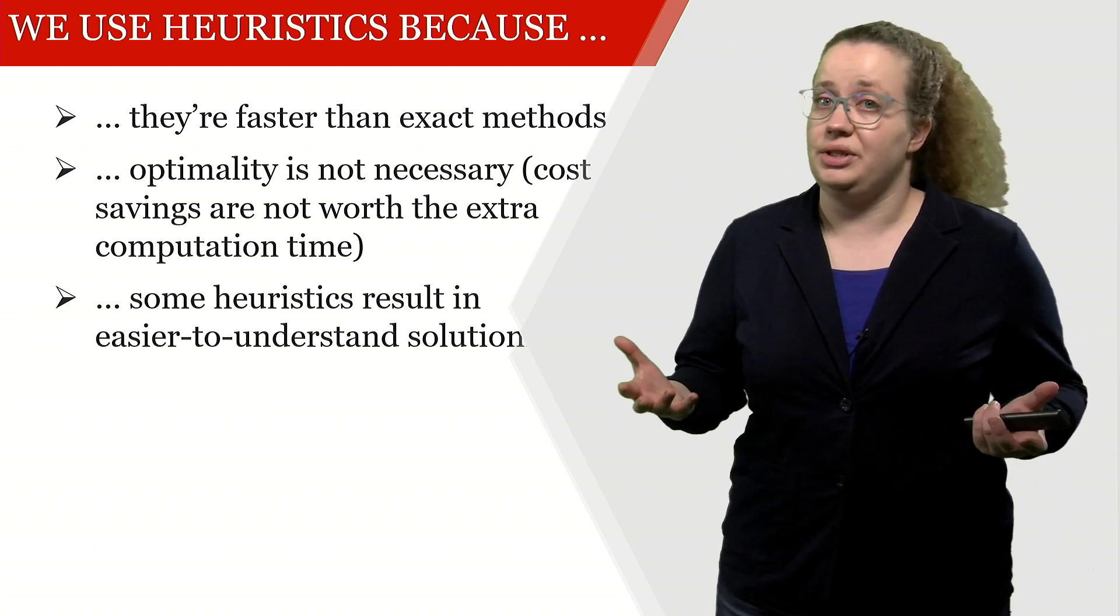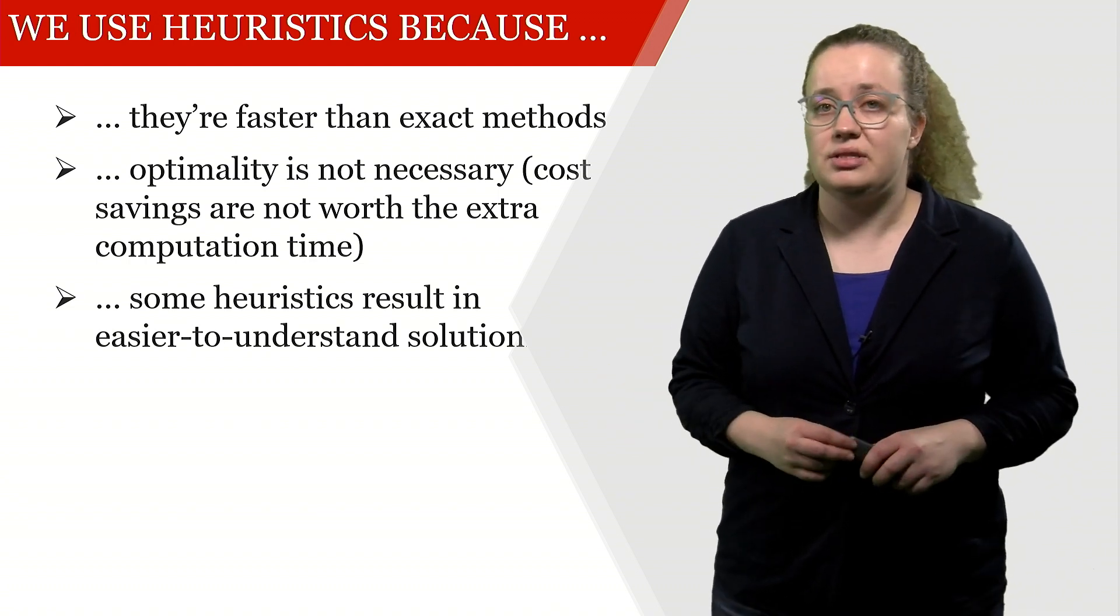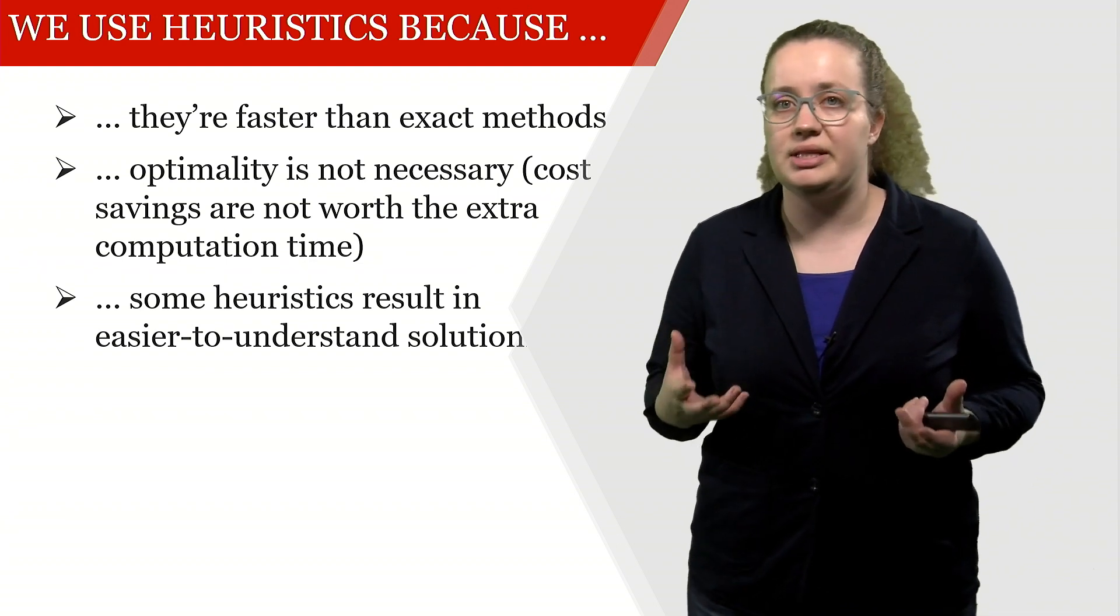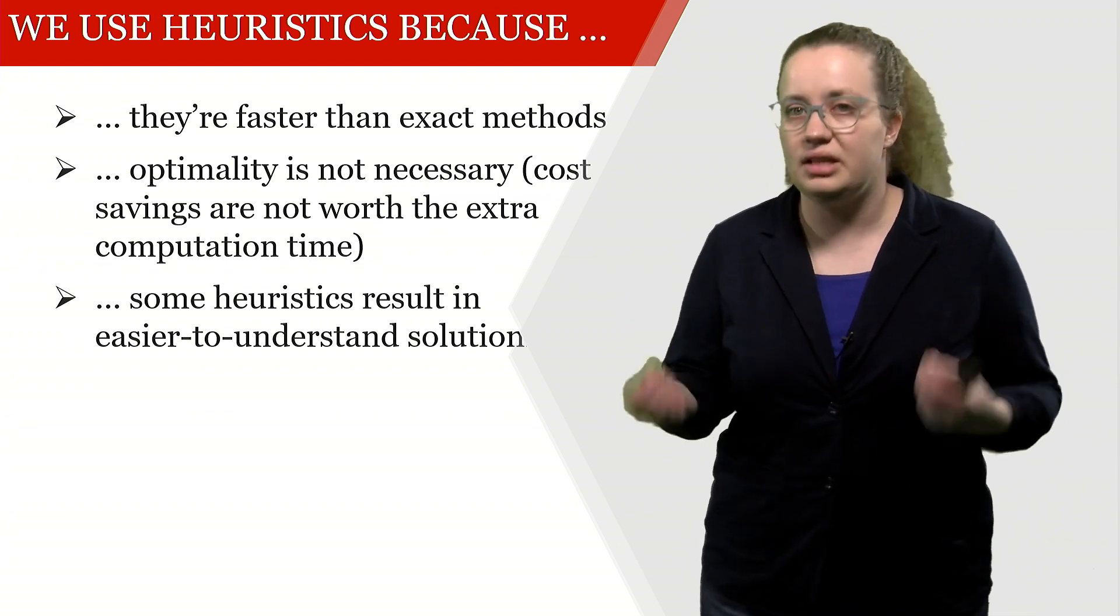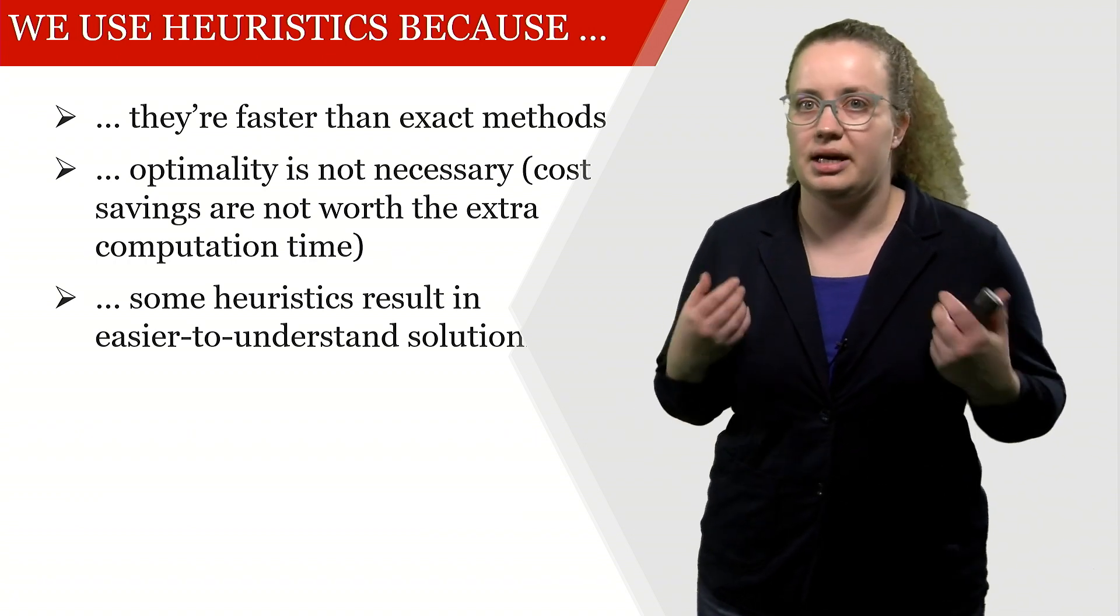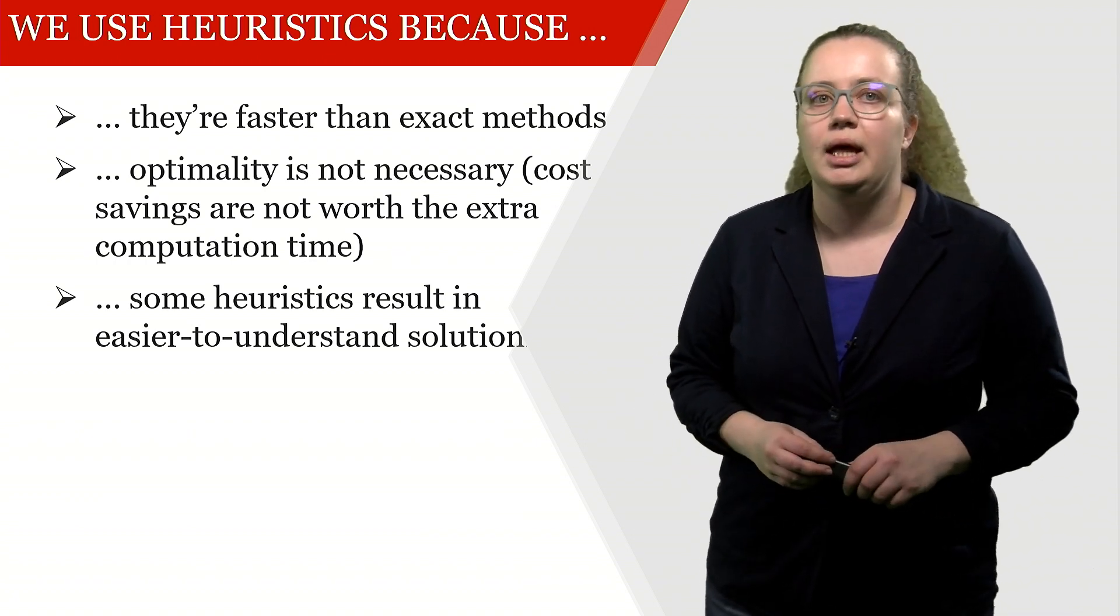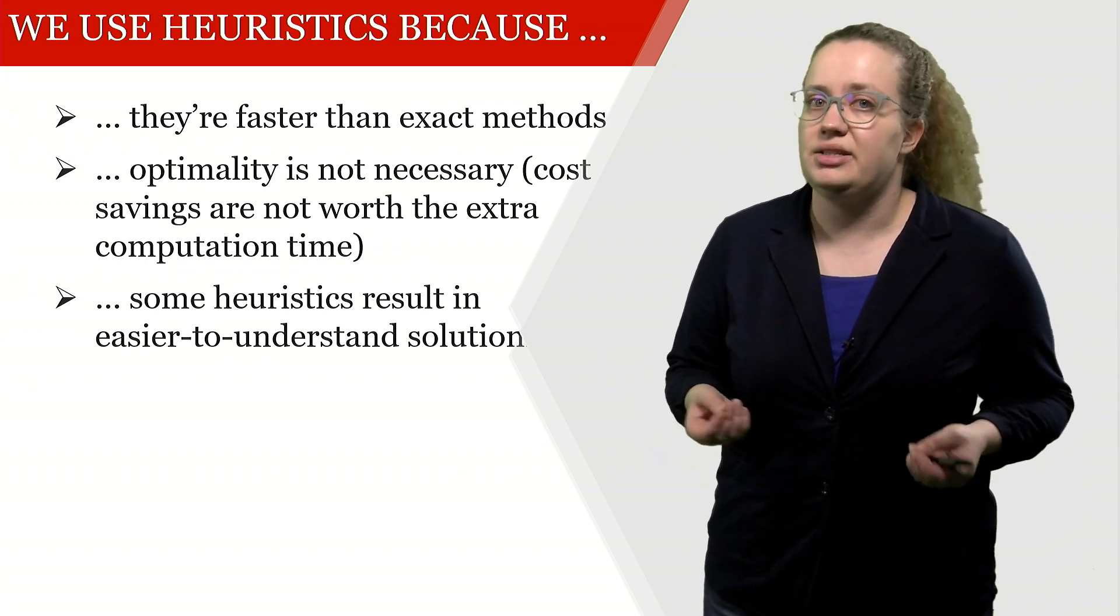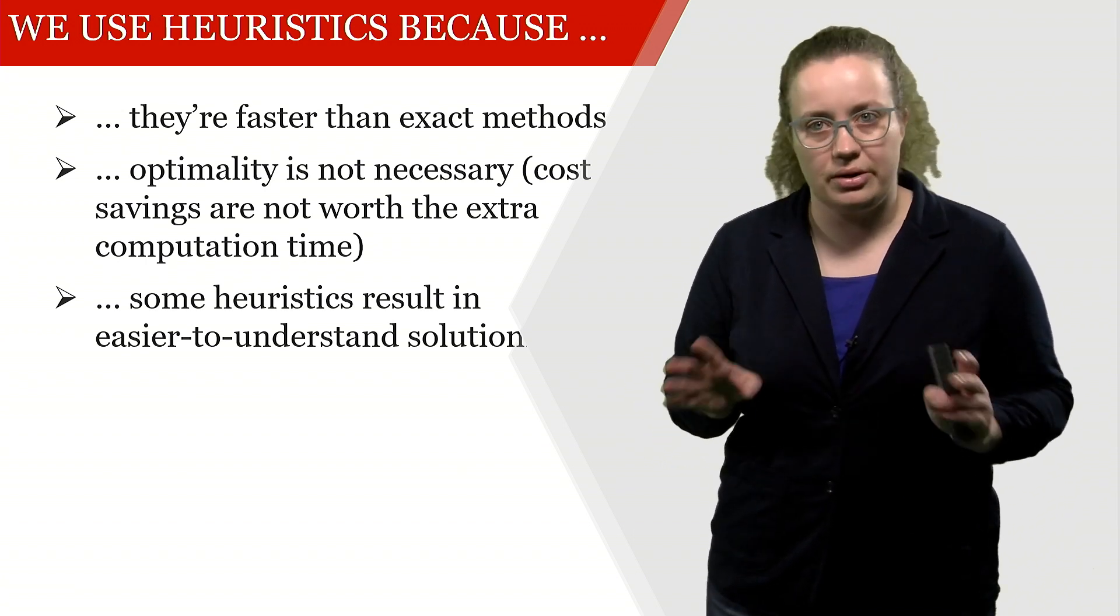We're using them because they are faster than exact methods, and optimality may not be necessary. For the Miller family, for example, it doesn't matter if they actually find the shortest route as long as they're not running around in cycles a lot in this zoo. Sometimes heuristics result in an easier to understand solution, though that is not always the case.